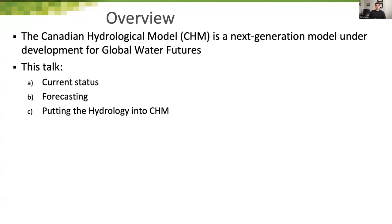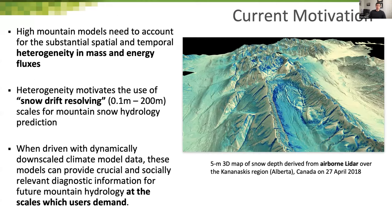I'm Chris Marsh, a postdoc with Global Water Futures at the University of Saskatchewan in Saskatoon, working predominantly under John Pomeroy. We're talking about multi-scale hydrological processes with the Canadian Hydrological Model, CHM. It's a next-generation model under development for Global Water Futures. I'll talk about its current status, some forecasting work I've been doing with it, and the longer-term goal of putting the hydrology into CHM.